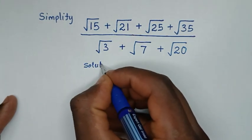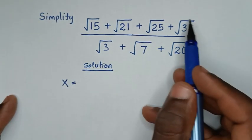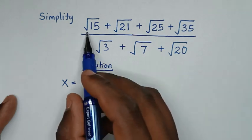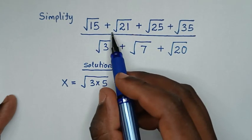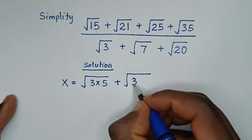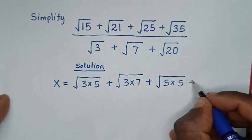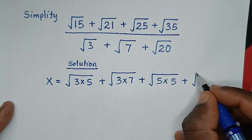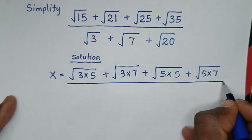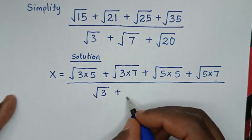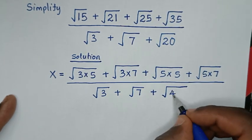Now, solution. In the first step, we start by letting x equal to these radicals. √15 = √(3×5), √21 = √(3×7), √25 = √(5×5), √35 = √(5×7), over √3 + √7 + √20 = √(4×5).